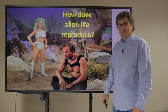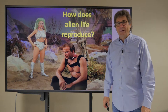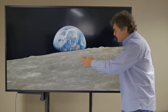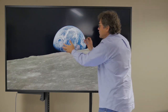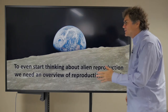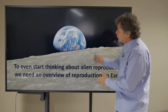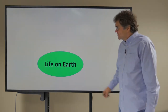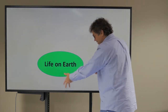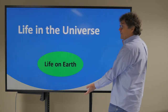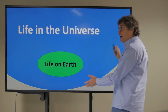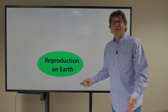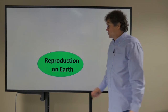This is something that Captain Kirk has probably thought about quite a bit. Here's the Earth, and we're trying to figure out the life on Earth — how does that life reproduce? To even start thinking about alien life, we need an overview of the types of reproduction of life on Earth. Life on Earth is a subset of life in the universe, so the same must be true of reproduction on Earth — it too must be a subset of reproduction in the universe.